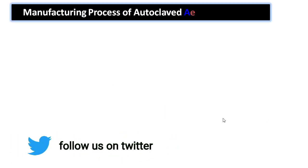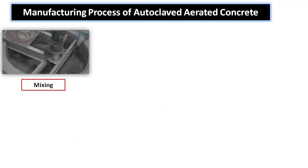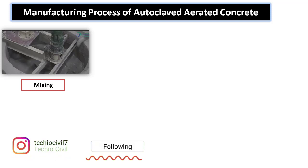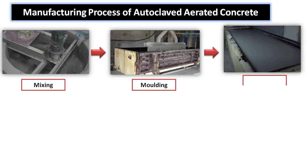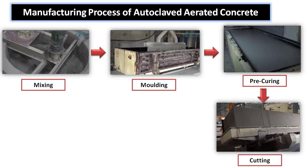The manufacturing process of Autoclaved Aerated Concrete begins by mixing all ingredients — flyash, cement, lime, gypsum, sand, and aluminium powder — in appropriate proportions. The mix is then filled into moulds that have been greased on every side for easy removal. The filled moulds go through a pre-curing stage where they are placed for 1–2 hours for initial setting of the concrete. They are then cut into appropriate dimensions and shapes.